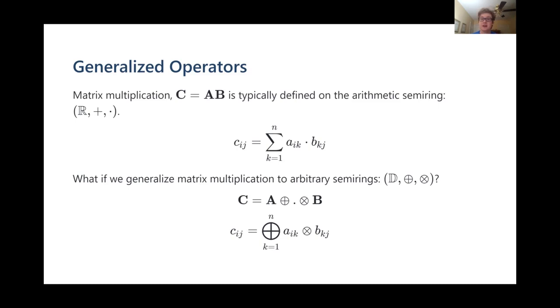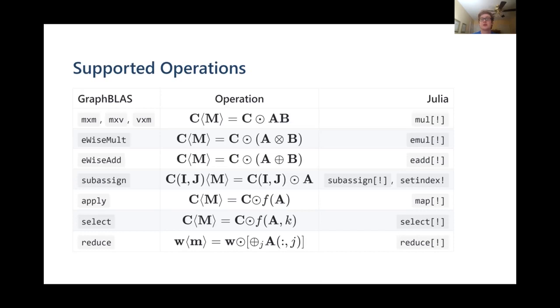With GraphBLAS, we can use virtually any domain d, virtually any operator in place of ⊗, and an appreciable but smaller number of operators, known as monoids, in place of ⊕.